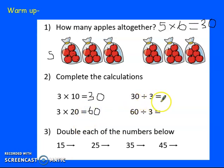30 divided by 3, so we know that 3 times 10 equals 30. 30 divided by 3 equals 10. And then 60 divided by 3, we can use this sum here to help us, it equals 20.